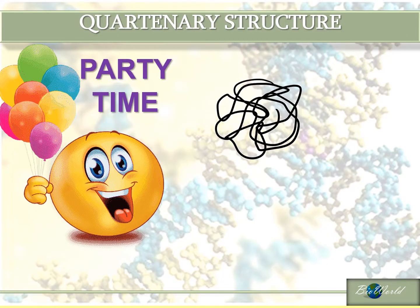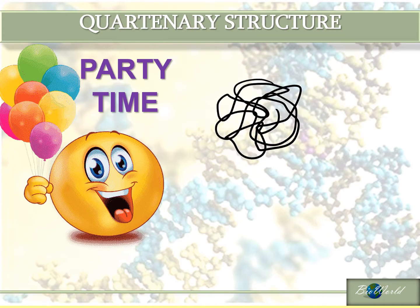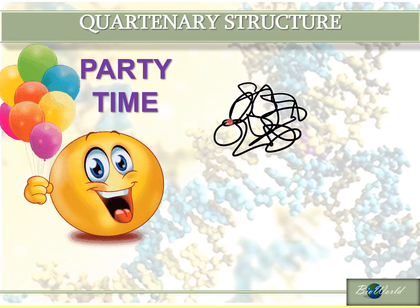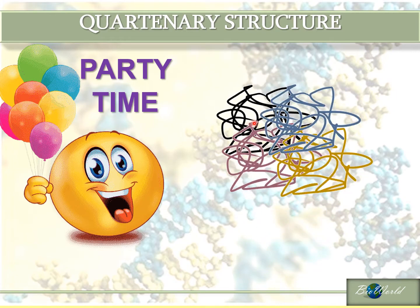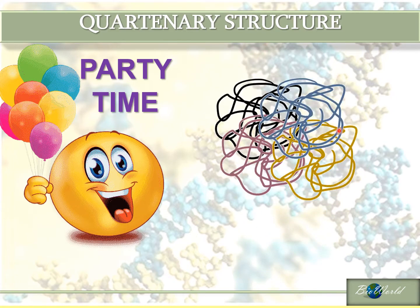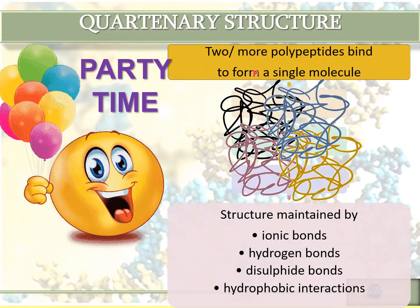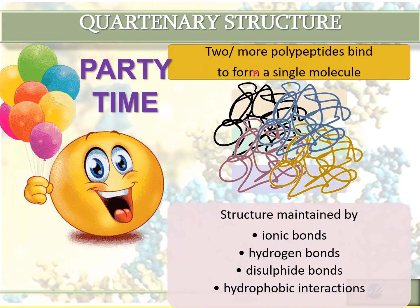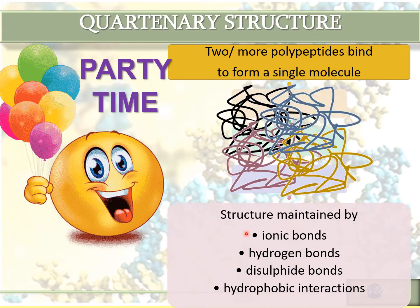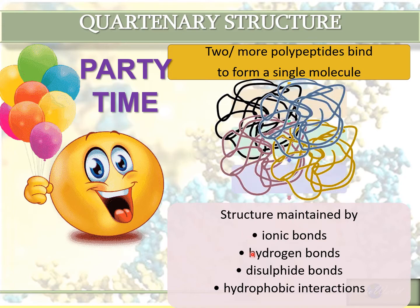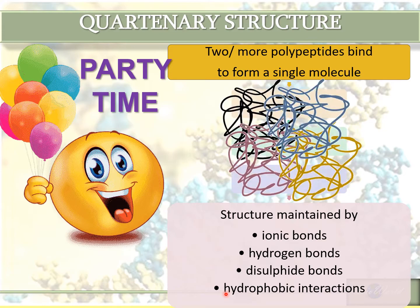So far, the primary, secondary and tertiary structures of proteins involve only one polypeptide. But if more than one polypeptide interacts with one another, then we form the quaternary structure. This structure is also maintained by the same bonds that maintain the tertiary structure — that is the ionic bonds, the hydrogen bonds, the disulfide bonds, as well as hydrophobic interactions.